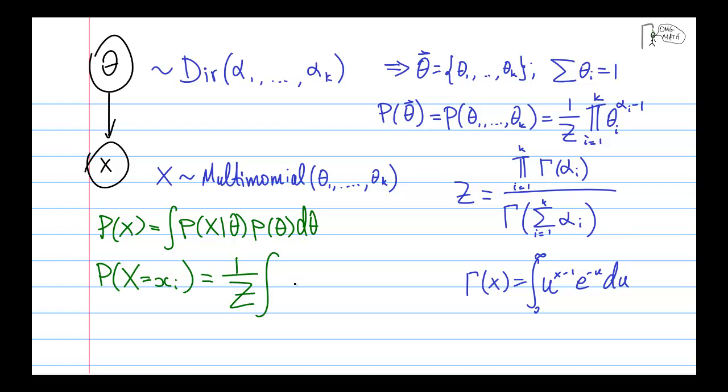So concretely, if we want the probability that x takes on a particular value little x sub i, we just plug in the Dirichlet PDF into the integral and we get this happy integral which actually gives us a very simple answer. And so what I want to do in the next few minutes is show you a really cool trick to take that integral and arrive to that simple answer.